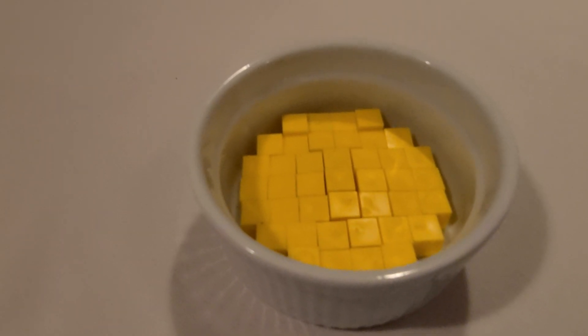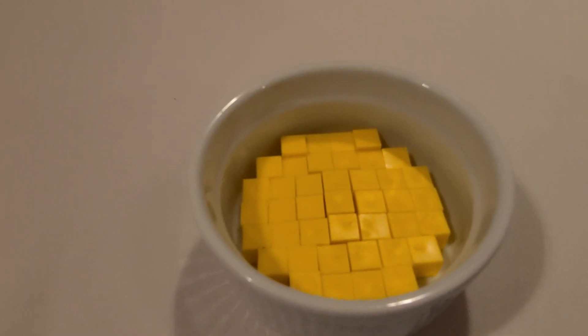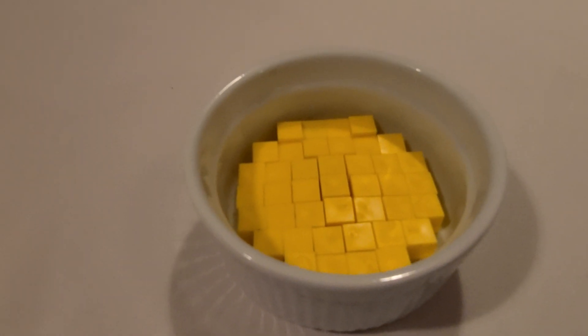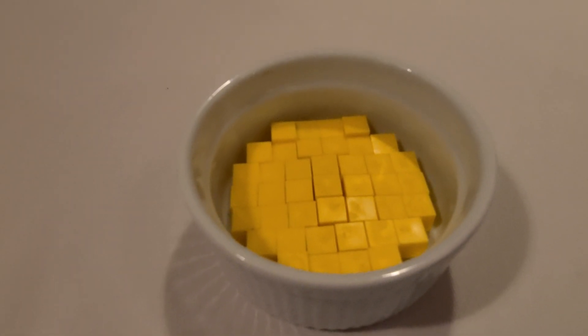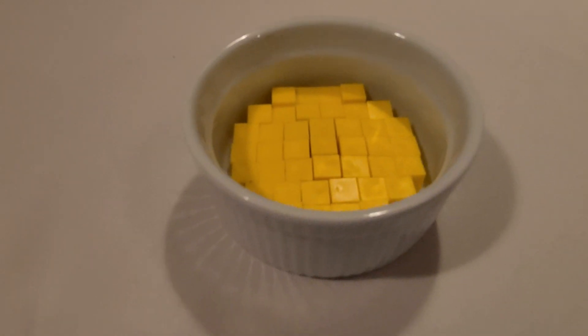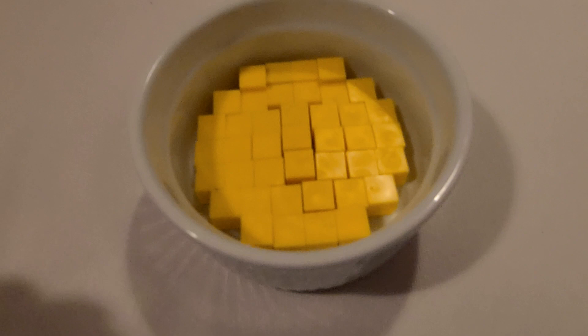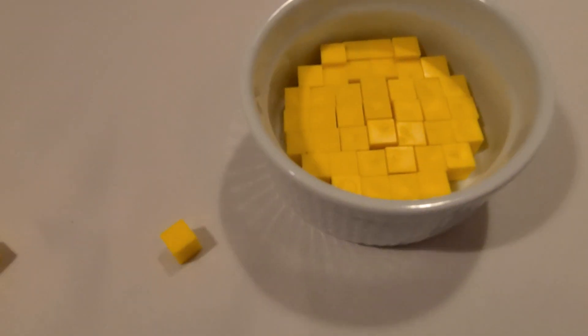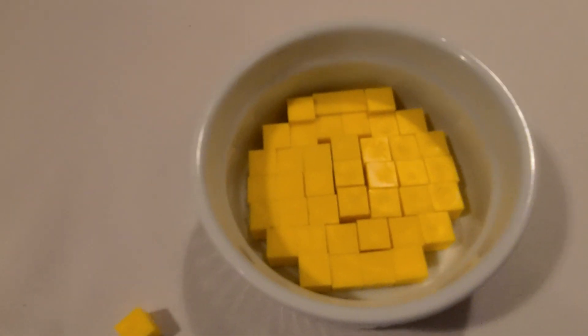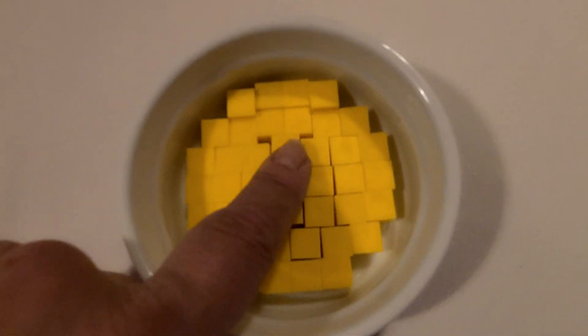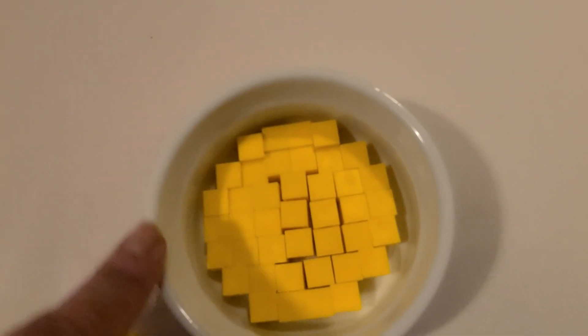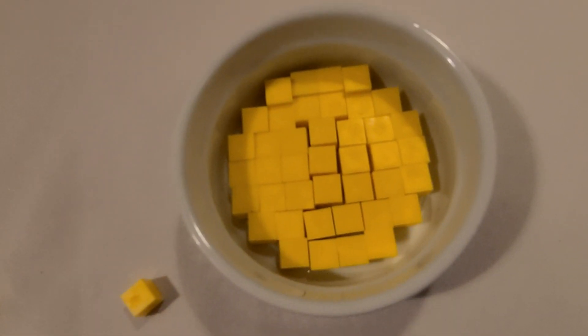The volume of a three-dimensional figure is the number of cubic units needed to fill the space. Here I have a little cup, and I've got one-centimeter cube units that I've put into the bottom. You can see I haven't been able to fill the entire bottom because this is a circle and these are cubes. So we have spaces along here.